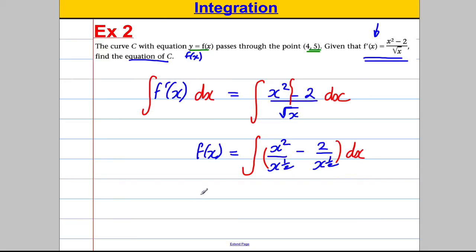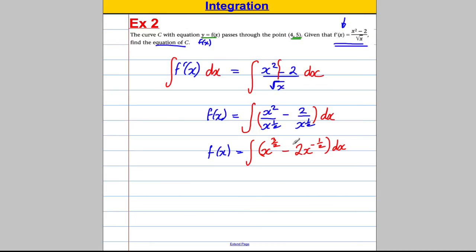We're not quite allowed to integrate just yet, because we don't have it in simple power form, so keep the integral. x squared divided by x to the half is x to the 2 takeaway half, which is x to the 3 over 2, or 1 and a half. And keep your subtract, 2 divided by x to the half is 2x to the negative half. Put your brackets round with respect to x. Now, at last, we are ready to integrate. It is in power form now.